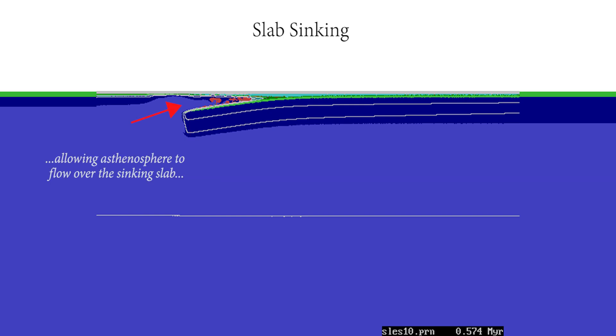Eventually, the asthenosphere begins to flow over the sinking slab, where it partially melts to form new oceanic crust by seafloor spreading. This eventually becomes the forearc. It is also where most ophiolites form.